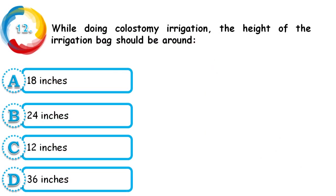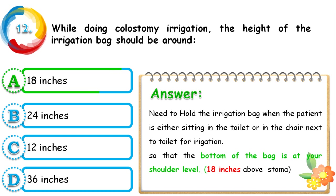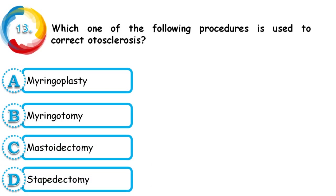Question 12: While doing colostomy irrigation, the height of the irrigation bag should be around — 18 inches, 24 inches, 12 inches, or 36 inches? The correct answer is 18 inches. When the patient is sitting on the toilet or in a chair next to the toilet, the bottom of the bag should be at shoulder level — approximately 18 inches above the stoma area.